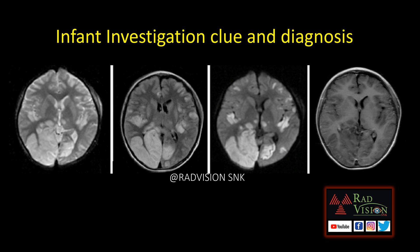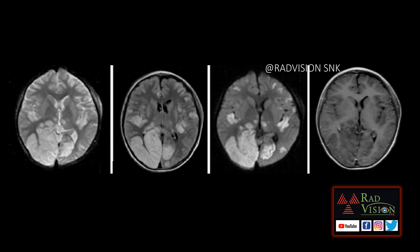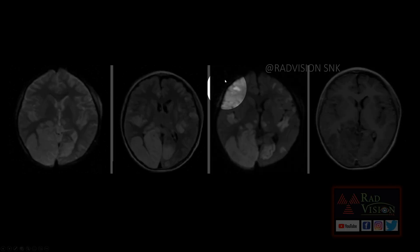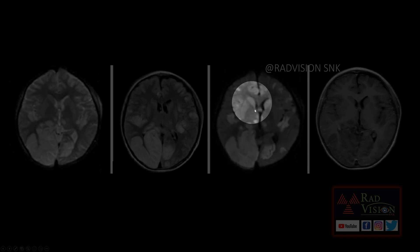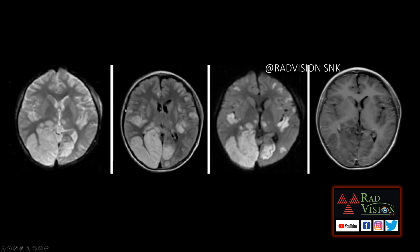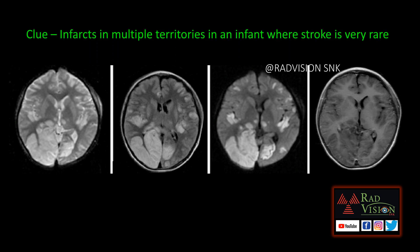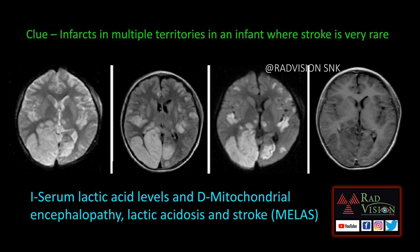Next case: an infant. The clue here is multiple infarcts noted in various territories — bilateral MCA, PCA, and even in the thalami — with no significant enhancement. Stroke in infants is very rare, and whenever you see infarcts in multiple territories in an infant, definitely suspect MELAS. The investigation to advise is serum lactic acid levels, which will be elevated. The diagnosis is Mitochondrial Encephalopathy, Lactic Acidosis, and Stroke-like episodes — MELAS.